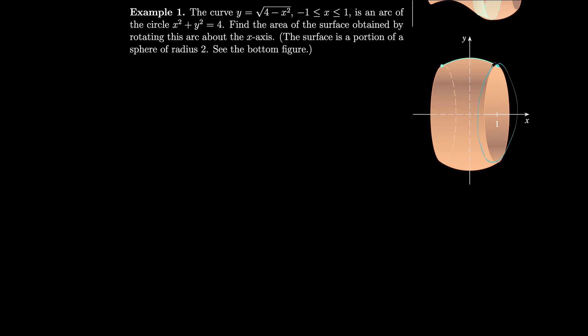So it goes around and around the x-axis, the entire thing, and it spins to give us this surface. The surface is actually what you'd get if you took a sphere of radius 2 and chopped off the sides, because we're only going between −1 and 1 as we spin around, and the circle has a radius of 2 — so we don't get the whole sphere.